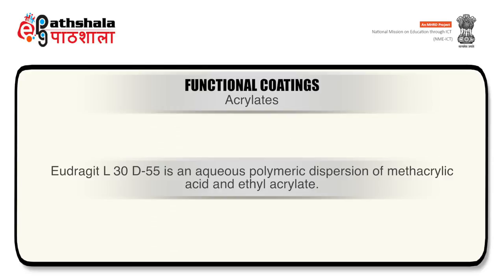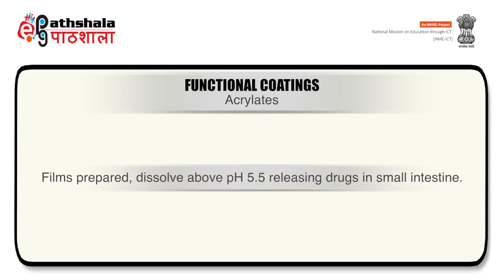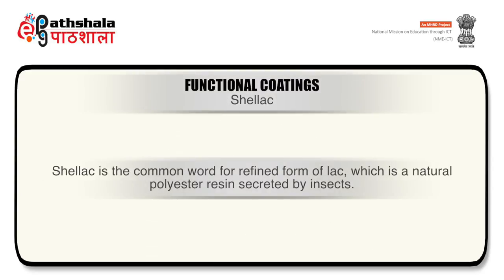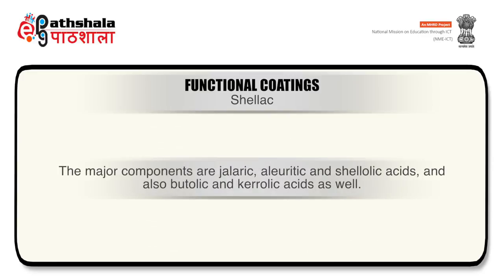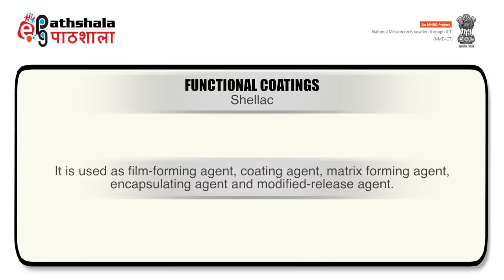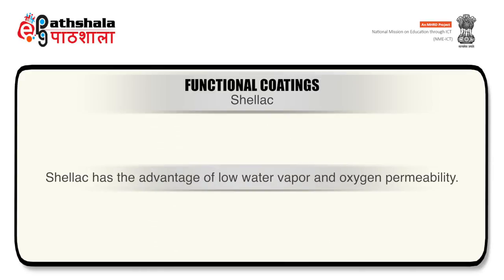Eudragit L30D55 is an aqueous polymeric dispersion of methacrylic acid and ethyl acrylate; films prepared dissolve above pH 5.5, releasing drugs in the small intestine. Shellac is the common word for the refined form of LAC, which is a natural polyester resin secreted by insects. LAC consists of a mixture of alicyclic and aliphatic acids; the major components are aleuritic, shellolic, butolic, and carolic acids. It is used as film forming agent, coating agent, matrix forming agent, encapsulating agent, and modified release agent. Shellac has the advantage of low water vapor and oxygen permeability, and has been accepted as a food additive in the USA, Europe, and Japan.